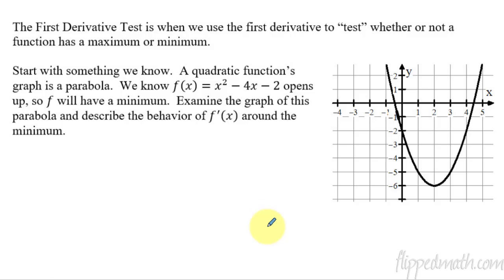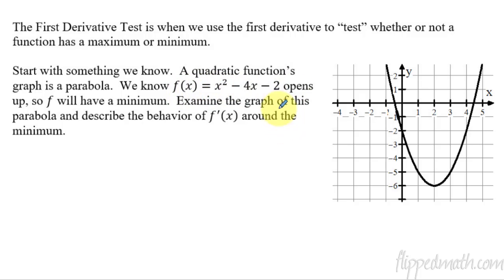So when we use the first derivative, it tells us if we can find a max or min. So let's start off with things that we know, and that is a quadratic function — the graph of it is a parabola. Here I've given you f of x equals some expression. I know it opens up because it's positive, so it has to have a minimum.